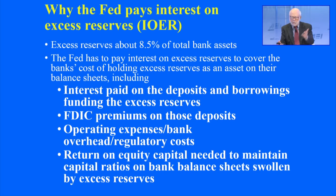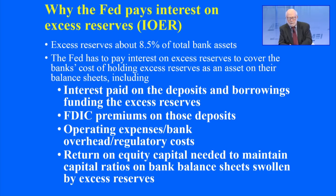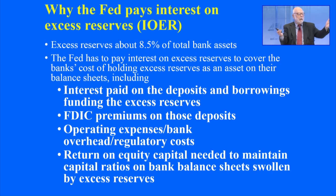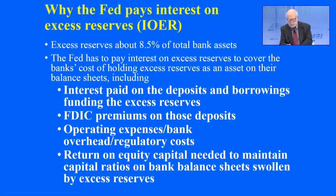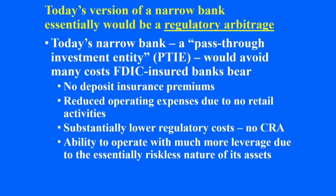It costs money for the banks to finance this asset and that's why the Fed has to pay interest on excess reserves — essentially to cover the banking industry's cost of holding these reserves. What are some of these costs? First, there is interest that the banks have to pay on their deposits that are funding the excess reserves, FDIC insurance premiums, operating expenses, and because these reserves have blown out the size of bank balance sheets, that's increased their equity capital requirements. So the Fed has no practical choice but to pay interest on these excess reserves.